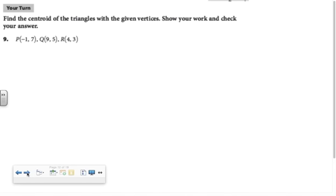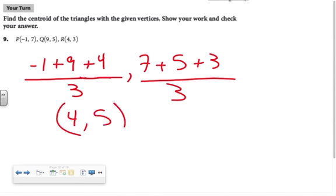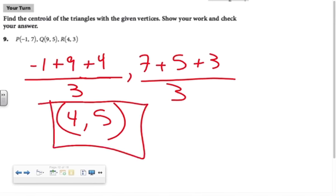The formula to find the centroid is: x1 plus x2 plus x3 over 3, comma y1 plus y2 plus y3 over 3. In this your turn problem, let us find the centroid: negative 1 plus 9 plus 4 divided by 3, comma 7 plus 5 plus 3 divided by 3. That's 8 plus 4 is 12, 12 divided by 3 is 4, comma 12 plus 3 is 15, 15 divided by 3 is 5. There's your centroid.